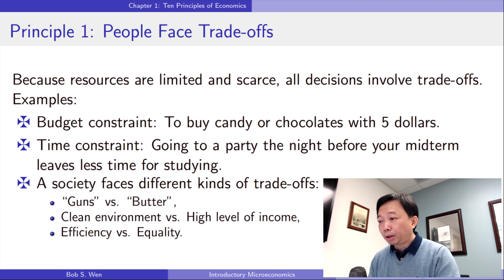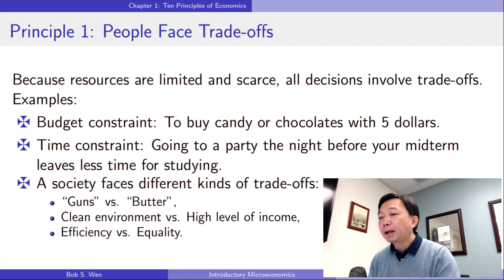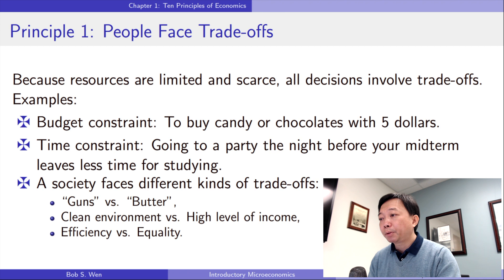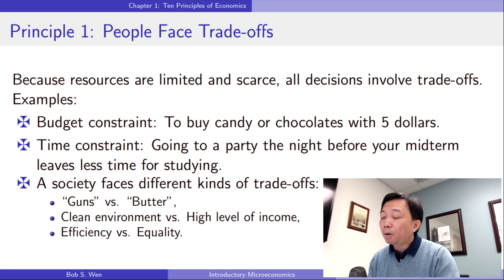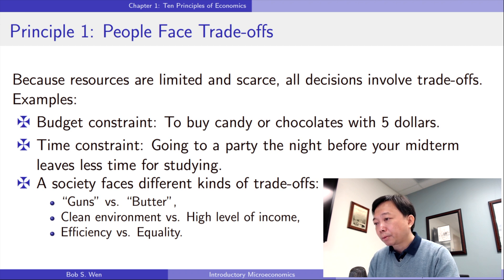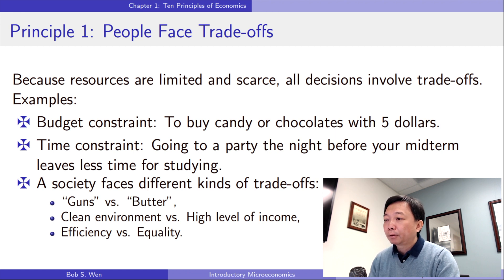Also important in modern society is the trade-off between a clean environment and a high level of income. Laws that require firms to reduce pollution raise the cost of producing goods and services. Because of these high costs, firms earn smaller profits, pay lower wages to workers, and charge higher prices to consumers. The cleaner environment and improved health come at the cost of reducing workers' income.